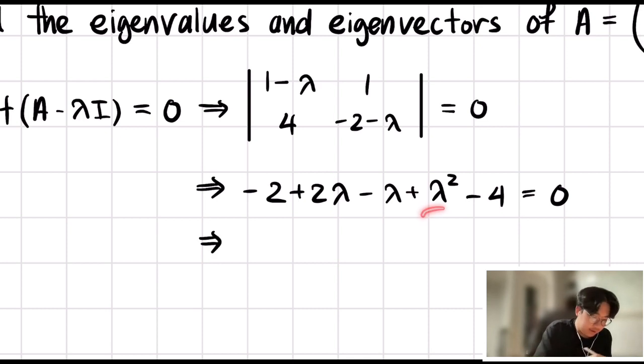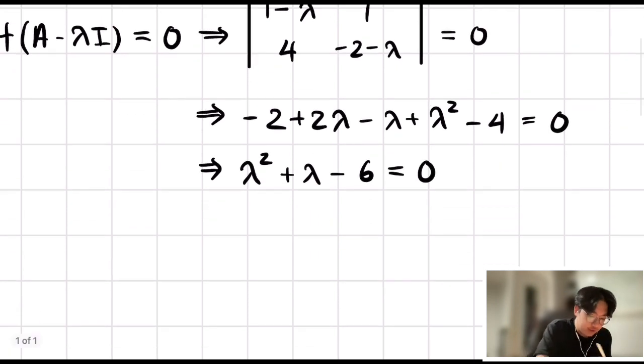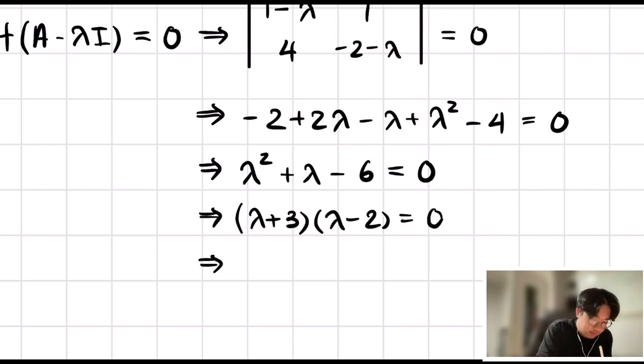From here, we can collect our λ squared, 2λ minus λ gives us plus λ, and from negative 2 and negative 4, you have negative 6. This becomes a simple factoring situation. You're looking for two numbers that multiply to negative 6, add to 1. So clearly here you have positive 3 and negative 2. Setting each of these equal to 0 gives you λ equal to negative 3 or λ equal to 2.